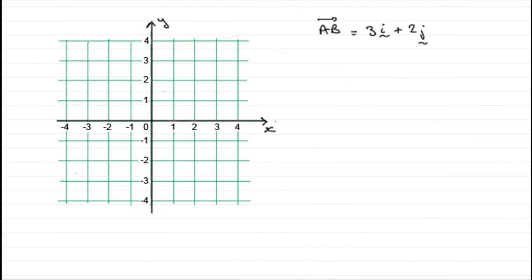Hi, welcome to this tutorial on position vectors. Now, suppose I had the vector AB equaling 3i plus 2j, where i and j were the unit vectors that we should be familiar with, the unit base vectors (1,0) and (0,1). So what would the vector A to B look like?